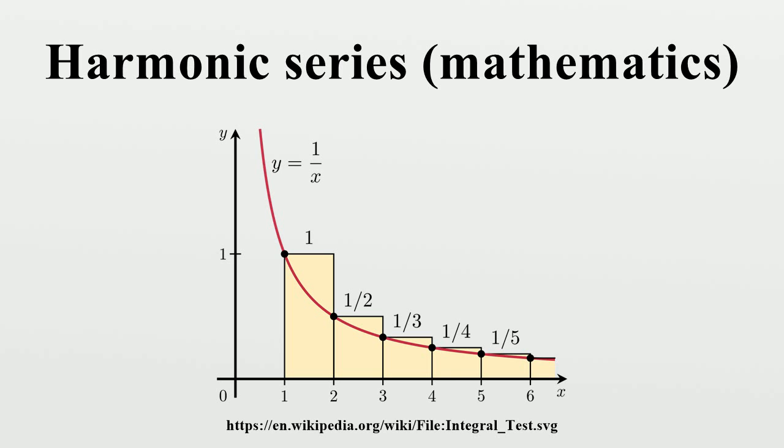The fact that the harmonic series diverges was first proven in the 14th century by Nicole Oresme, but this achievement fell into obscurity. Proofs were given in the 17th century by Pietro Mengoli, Johann Bernoulli, and Jacob Bernoulli.